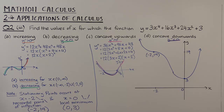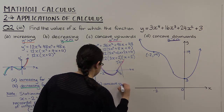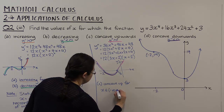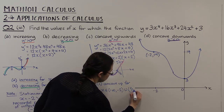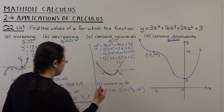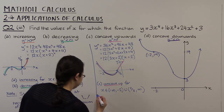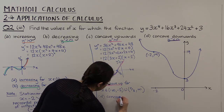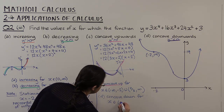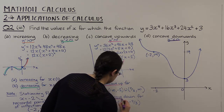Writing our answer: for part c, the function is concave up — y'' greater than zero — for x in (−∞, −2) union (−2/3, ∞). That's the pink section. For part d, it's concave down — y'' less than zero — for x in (−2, −2/3). So that's when the function is concave down.